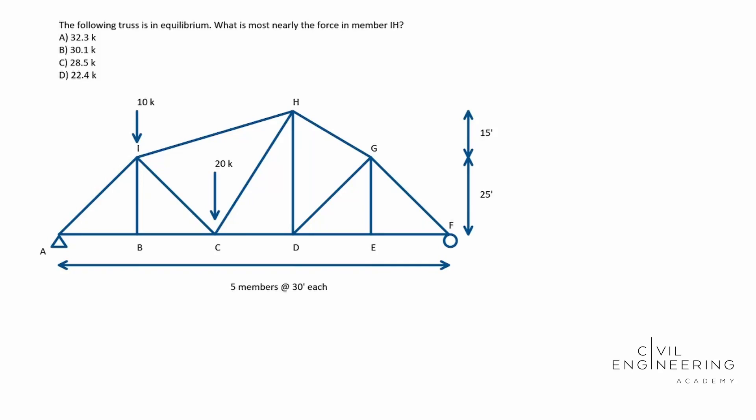Hey, what's going on everybody? Welcome back to Civil Engineering Academy, my name's Cody. Let's get started. Today we have a structural mechanics problem, in particular this is a trusses problem, and we're going to be remembering how the method of sections work. The following truss is in equilibrium. What is most nearly the force in member IH? And then it gives us four options there for our answers.